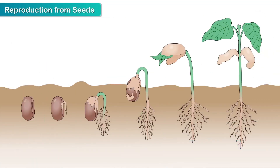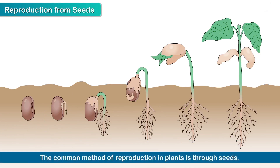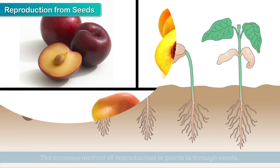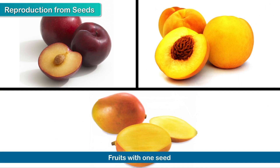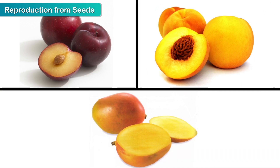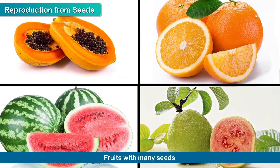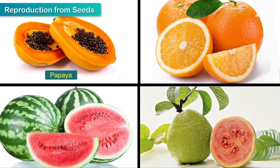Reproduction from seeds. One of the most common methods of reproduction in plants is through seeds. Some fruits have only one seed inside them, such as plums, peaches, mangoes, while some others have many, such as papaya, watermelon, orange and guava.